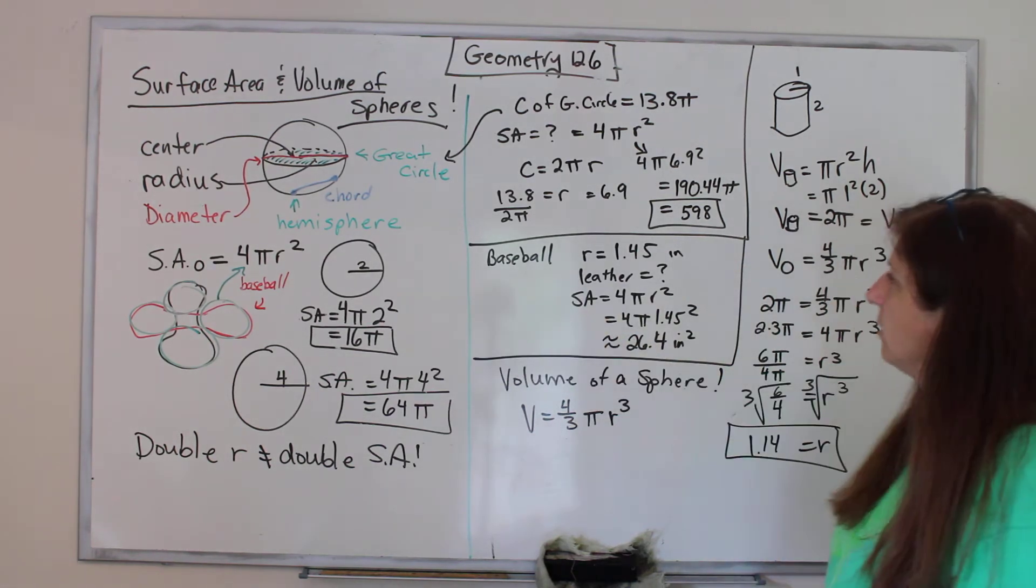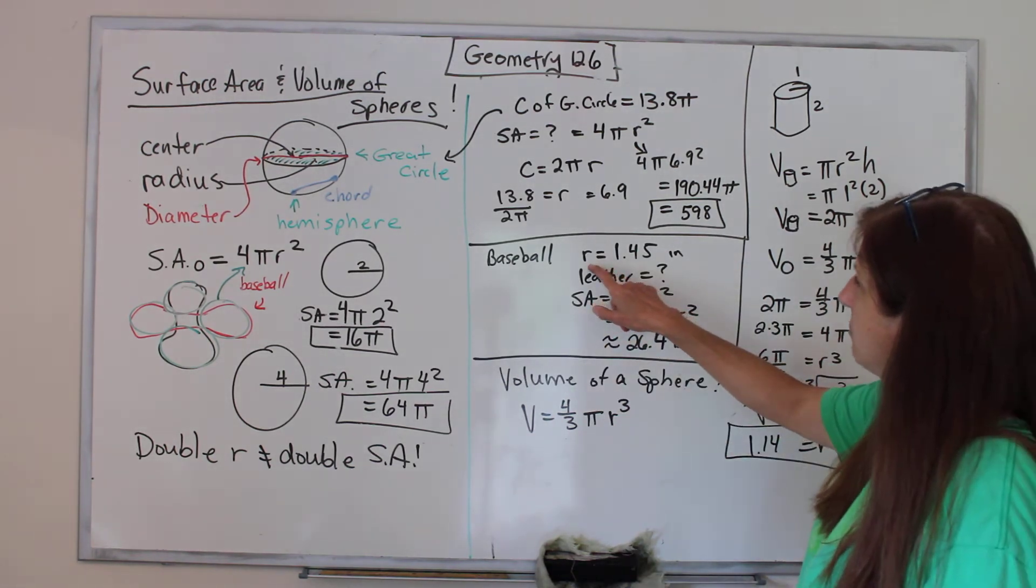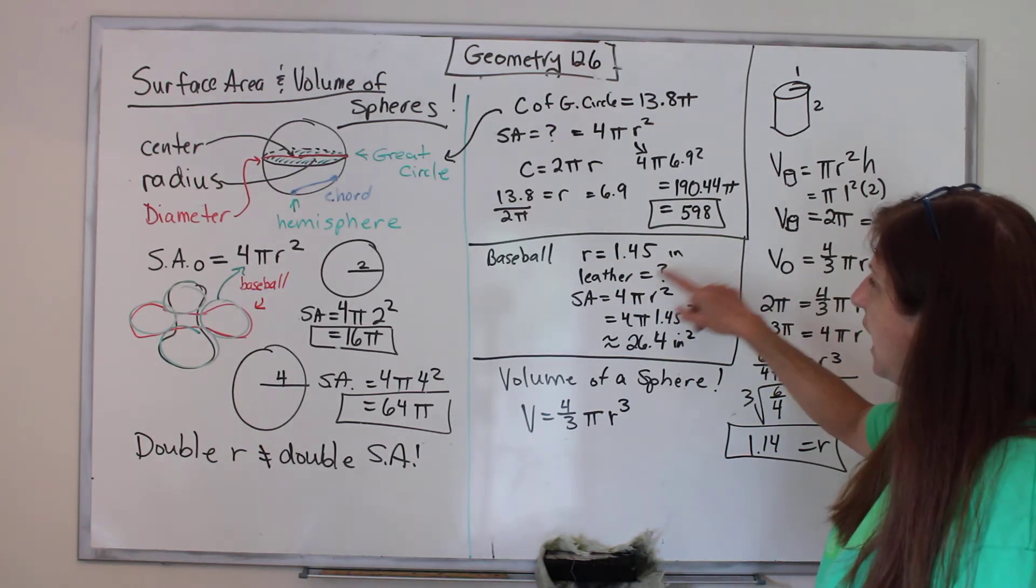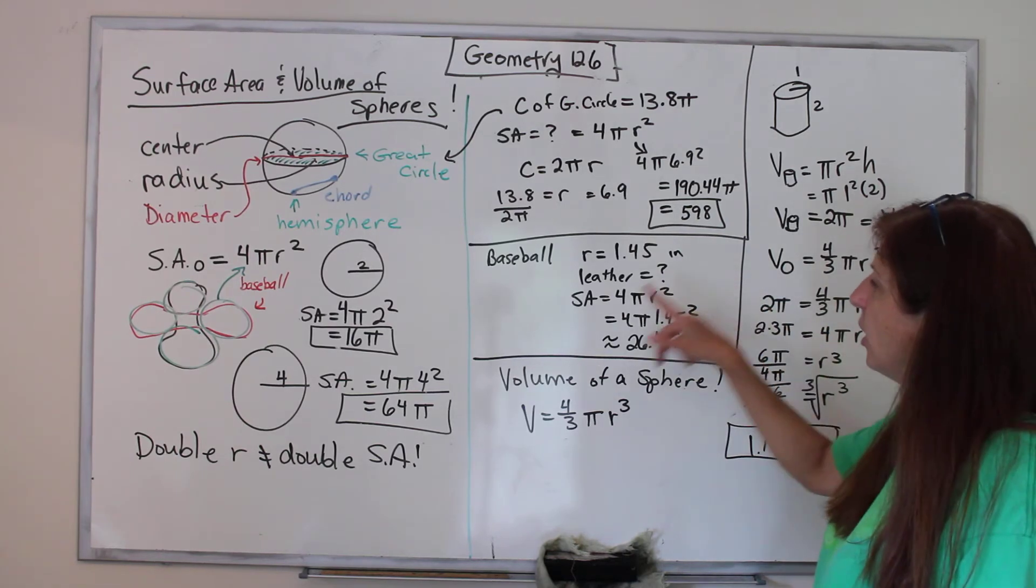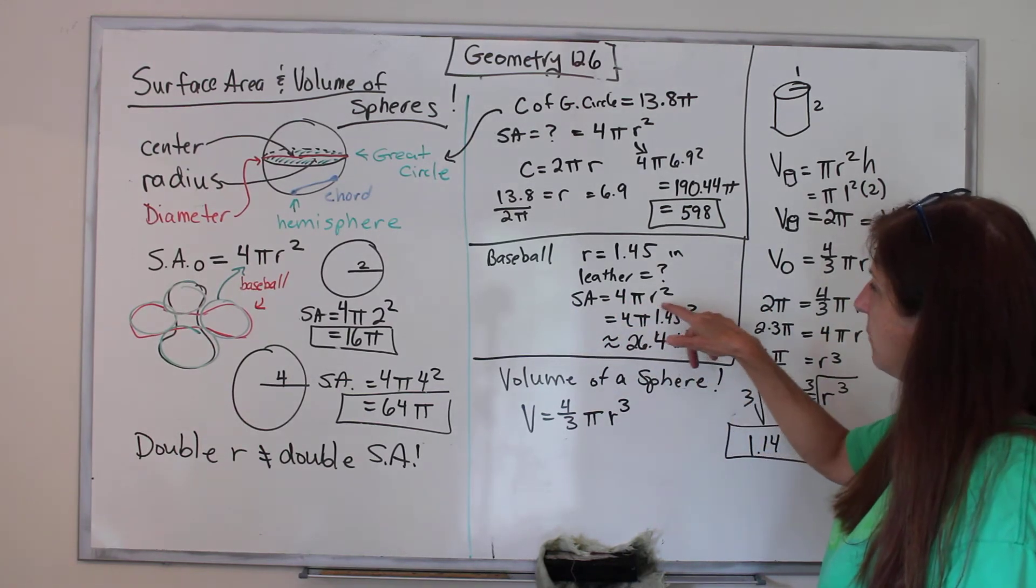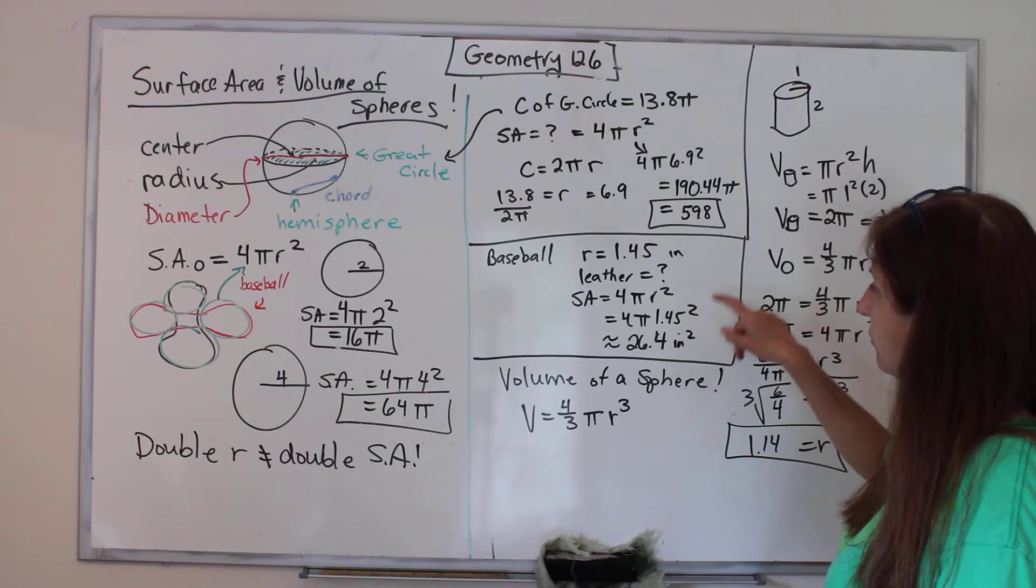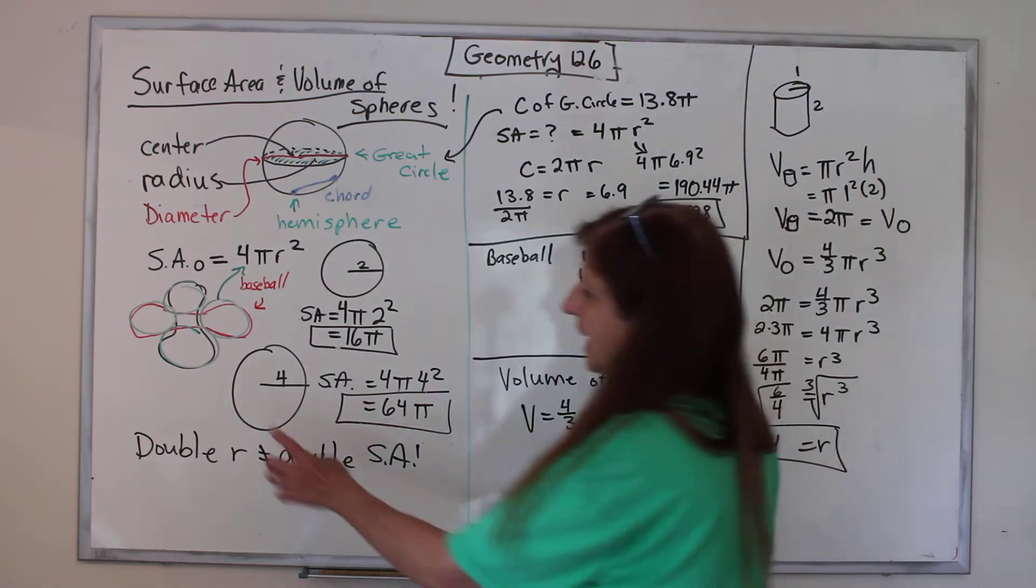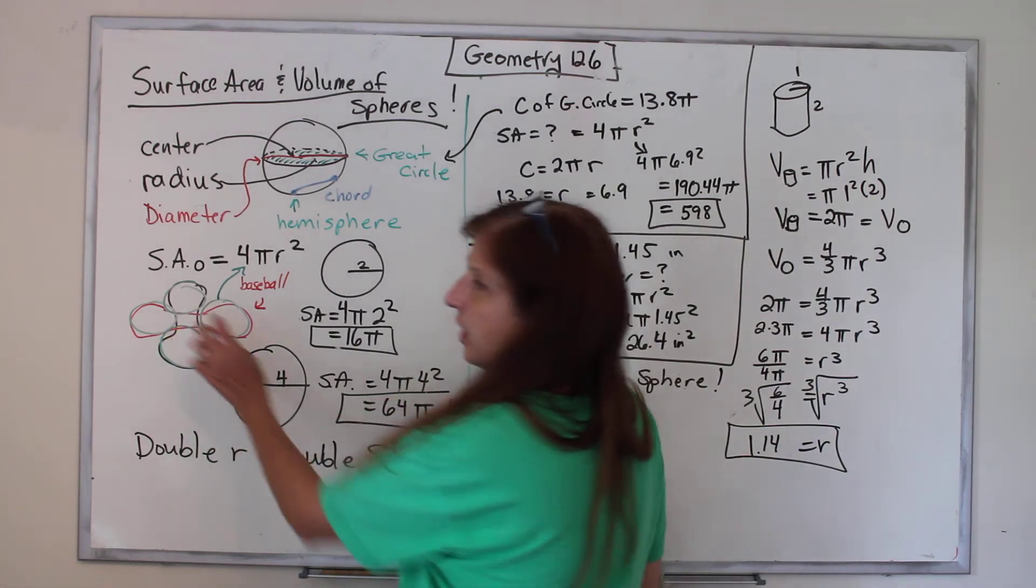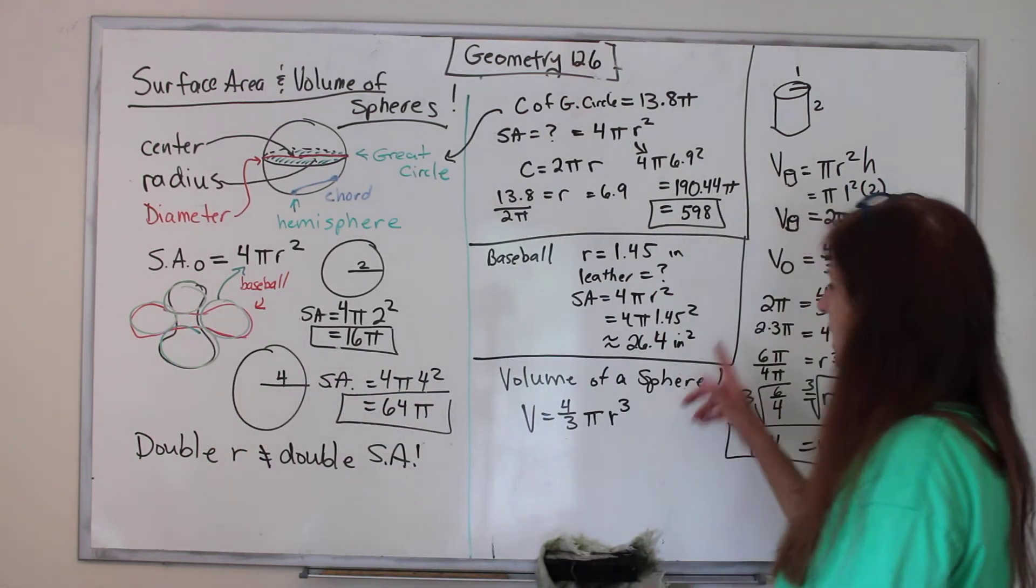Here's our baseball. They tell us the baseball's radius is 1.45 inches. How much leather approximately does it take to cover it? The surface area is 4πr², so 4π(1.45²) equals 26.4 inches squared. But of course, it's not exact because the leather is doubled up right there in the middle.